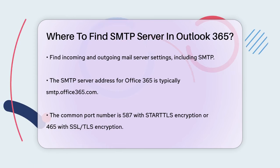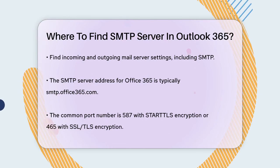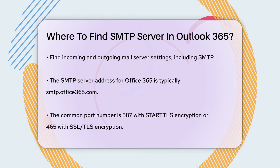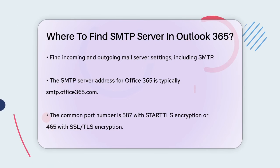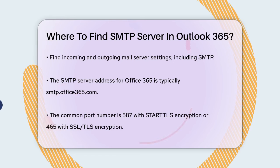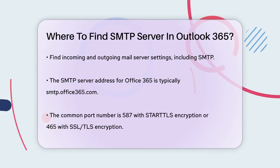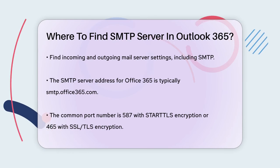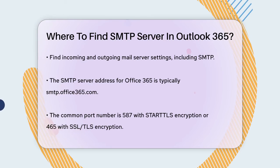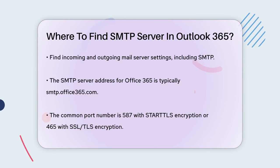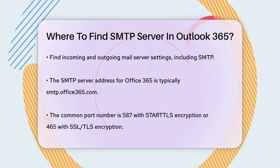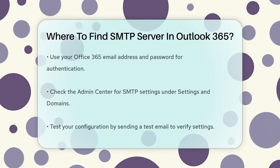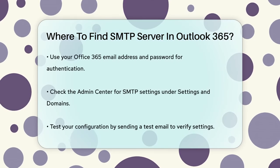For Office 365, the SMTP server address is typically smtp.office365.com. You'll also need to know the port number and encryption method. The port number is usually 587 with STARTTLS encryption, or 465 with SSL/TLS encryption. Make sure to use your Office 365 email address and password for authentication.